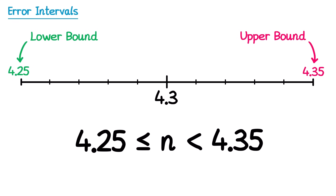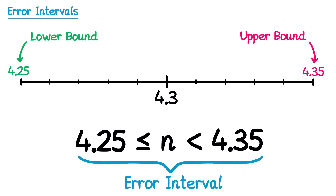This means we're saying the number could be equal to 4.25. However, we leave a less than symbol with the 4.35 to indicate we can have any number up to that number, but not that number itself. This is called an error interval, and this is the point of this video.